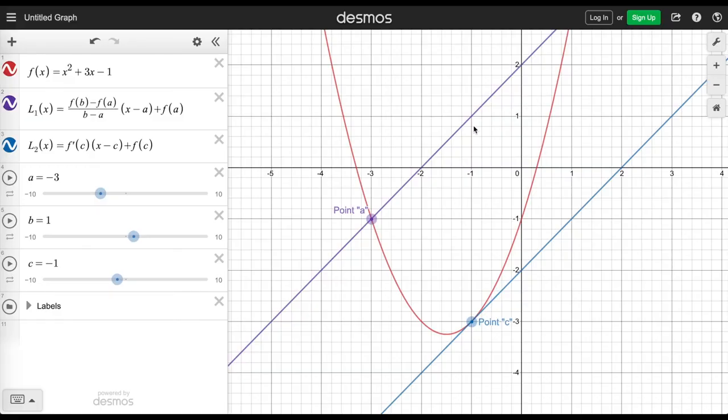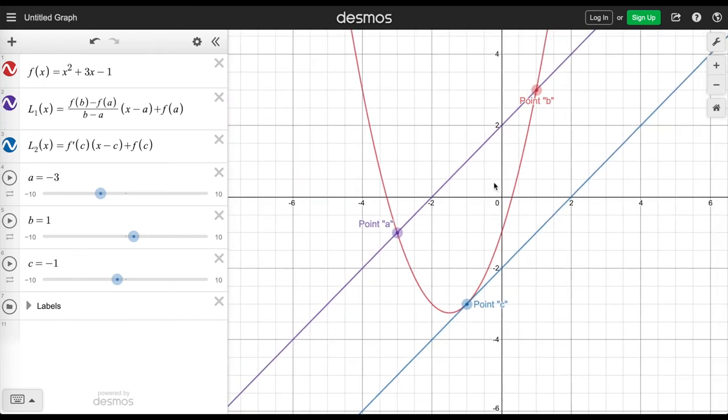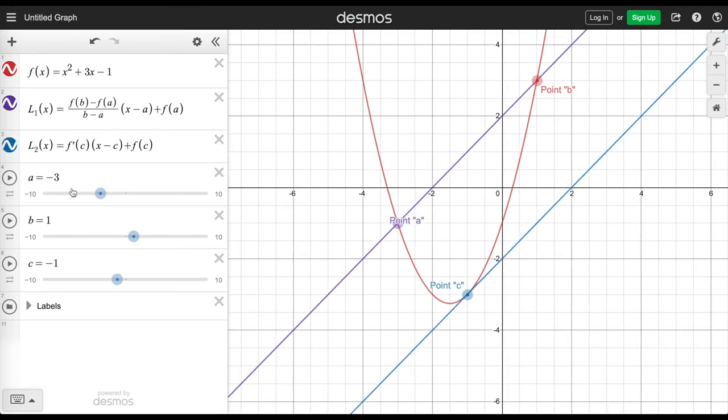Okay, so now we're just putting this all into Desmos. So we've got our function in here, f(x), you can see with this red parabola here. This first line here is the average rate of change between a and b, which you can see over here, it's this purple line. The second blue line here is the tangent line to this function f(x) at c. We've also defined what a, b, and c are over here. a is -3, b is 1, c is -1.